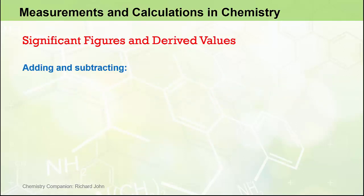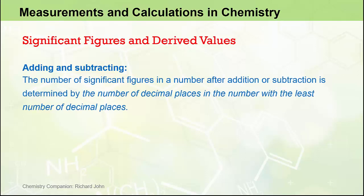When we are adding or subtracting, the process is slightly different, and it's more to do with the number of decimal places in the original numbers. The number of significant figures in a number after addition or subtraction is determined by the number of decimal places in the number with the least number of decimal places. Again, a mouthful and best shown by example.